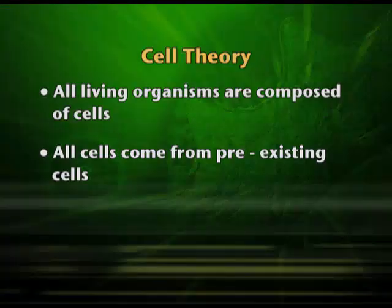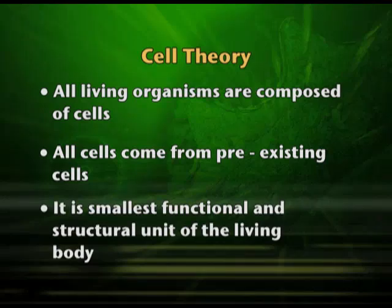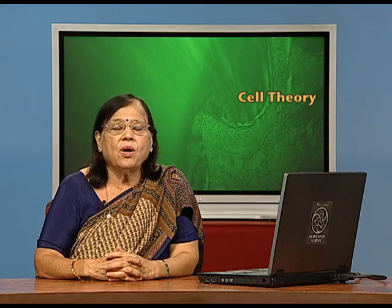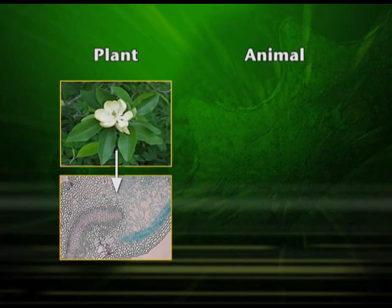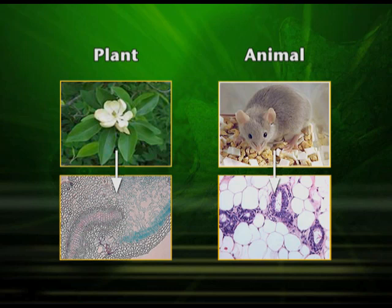So, two points: all living organisms are composed of cells, and cells can be formed only from pre-existing cells. The third point is that the cell is the smallest functional and structural unit of the living body. This is how cell theory is explained. All organisms are made up of cells — if it is a flower, it is made up of cells; if it is a rabbit or rat, it is made up of cells. But there is some difference between animal cell and plant cell, though there are more common features between the two types.